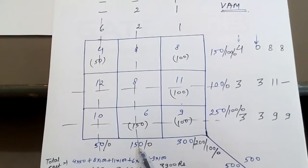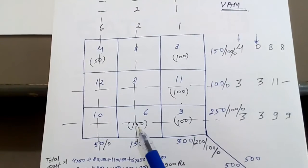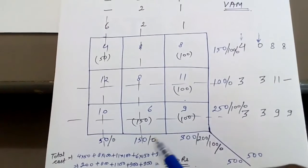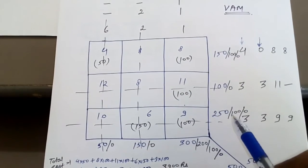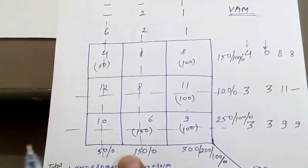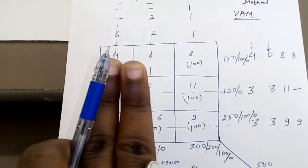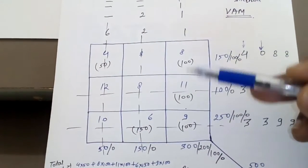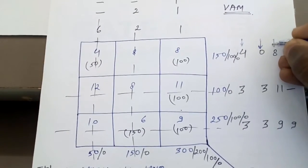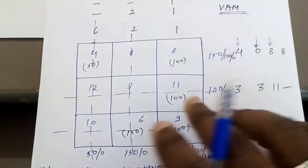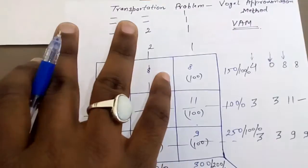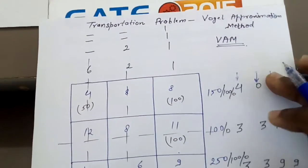Now two columns are gone and only one column remains. For the third step, find the penalty. Since only one column remains, the row penalties are the elements themselves: 8, 11, and 9. The column penalty is dash, dash, and 1 (since 9 minus 8 = 1).